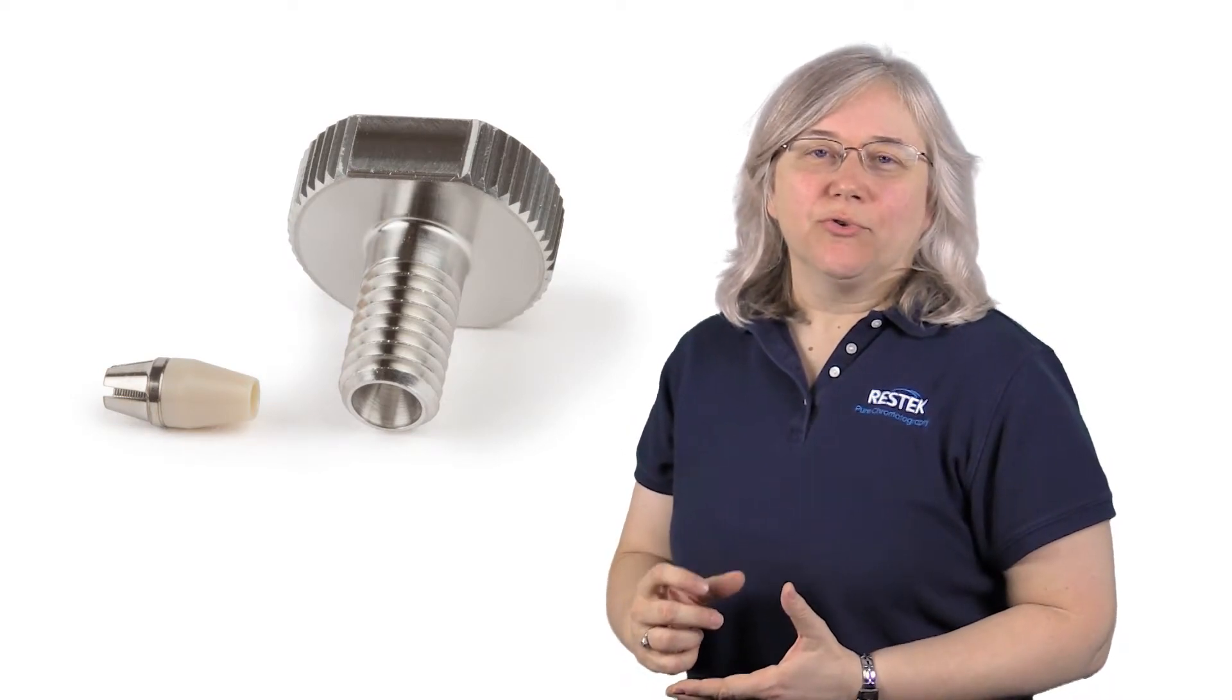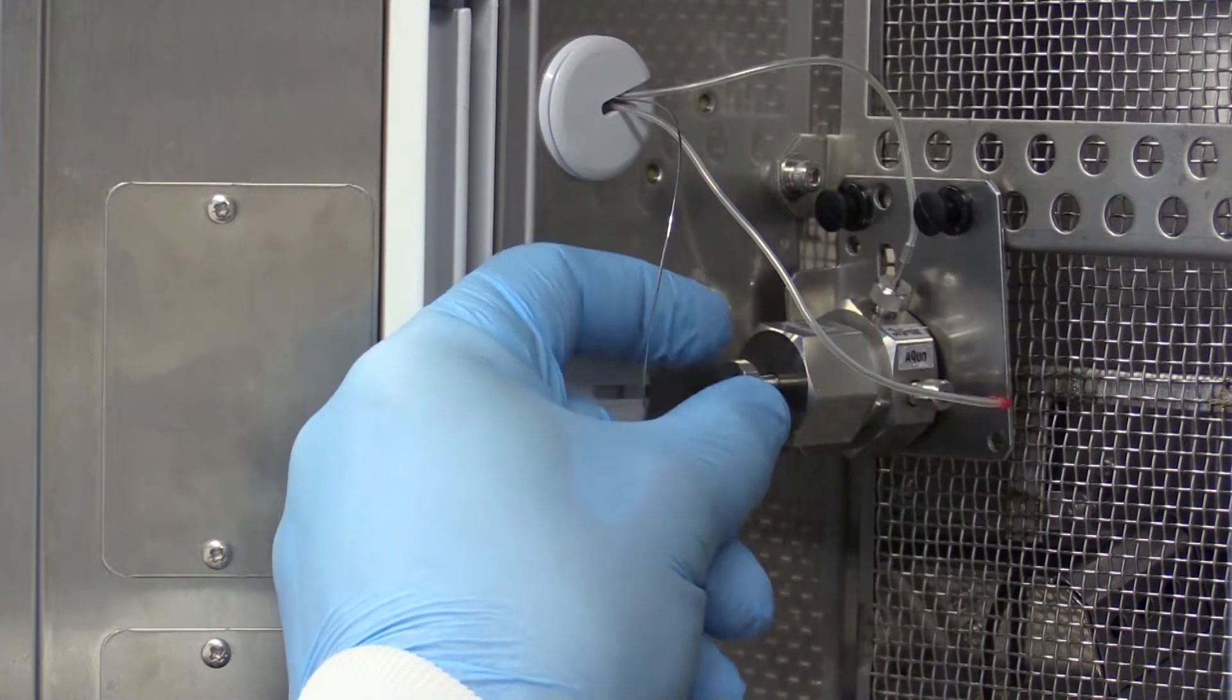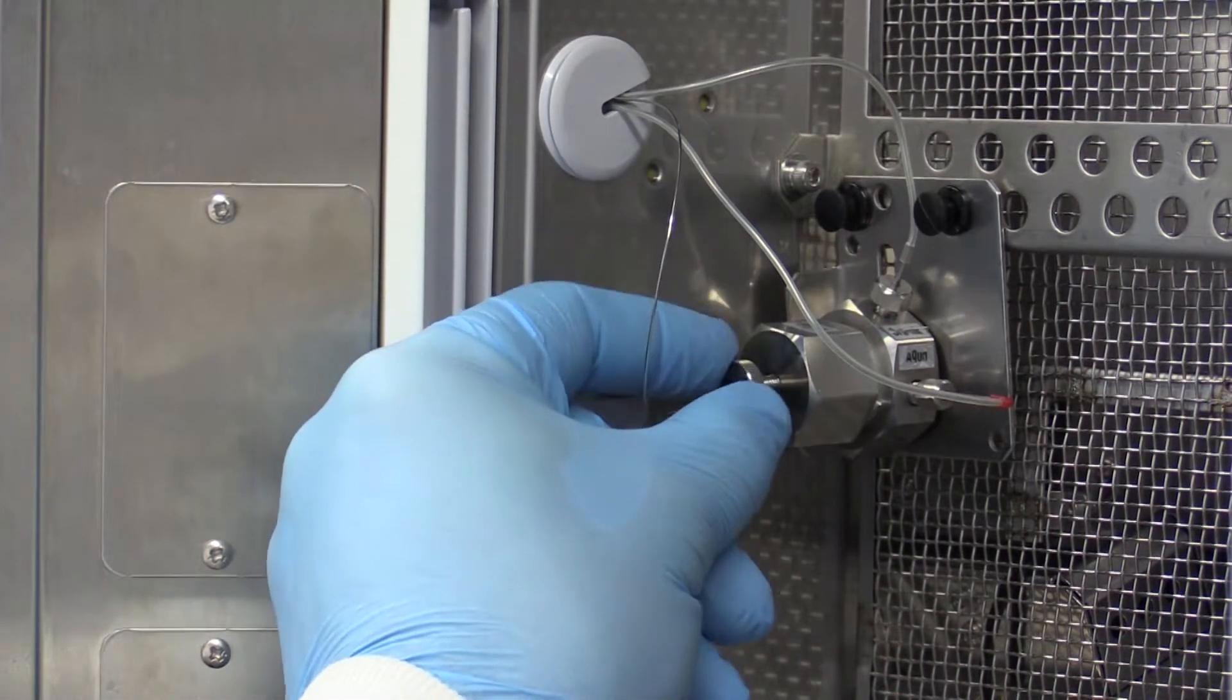Next is the hand tight fitting, which has a little bit of a larger head for a better grip when you're tightening by hand. You need to use this where you have a little extra space, like a connection from the pump to the mixer.